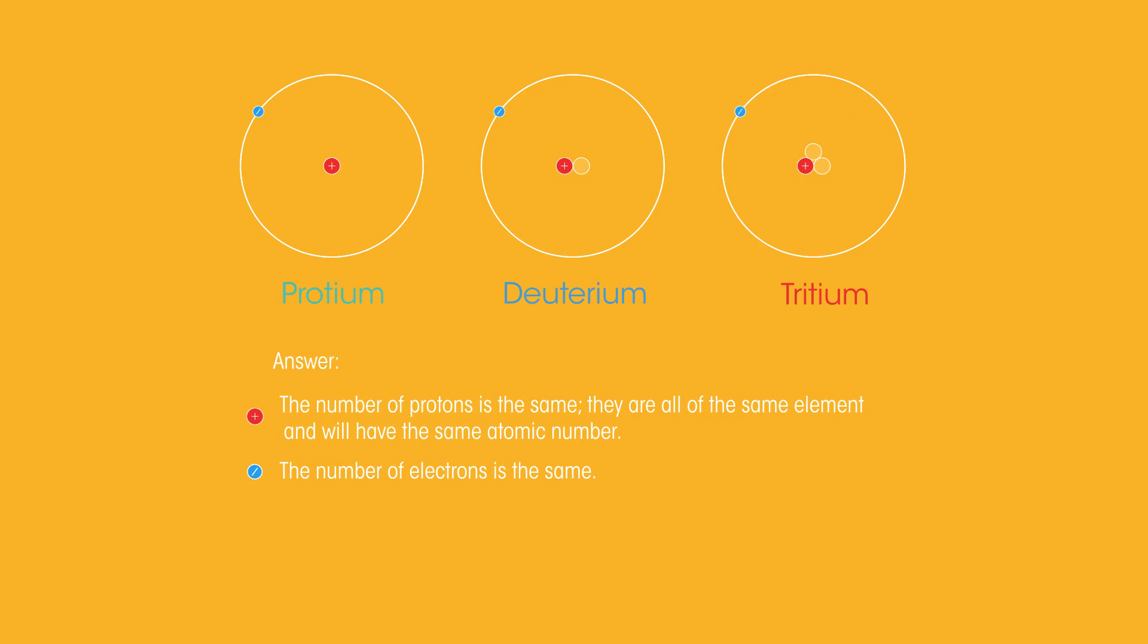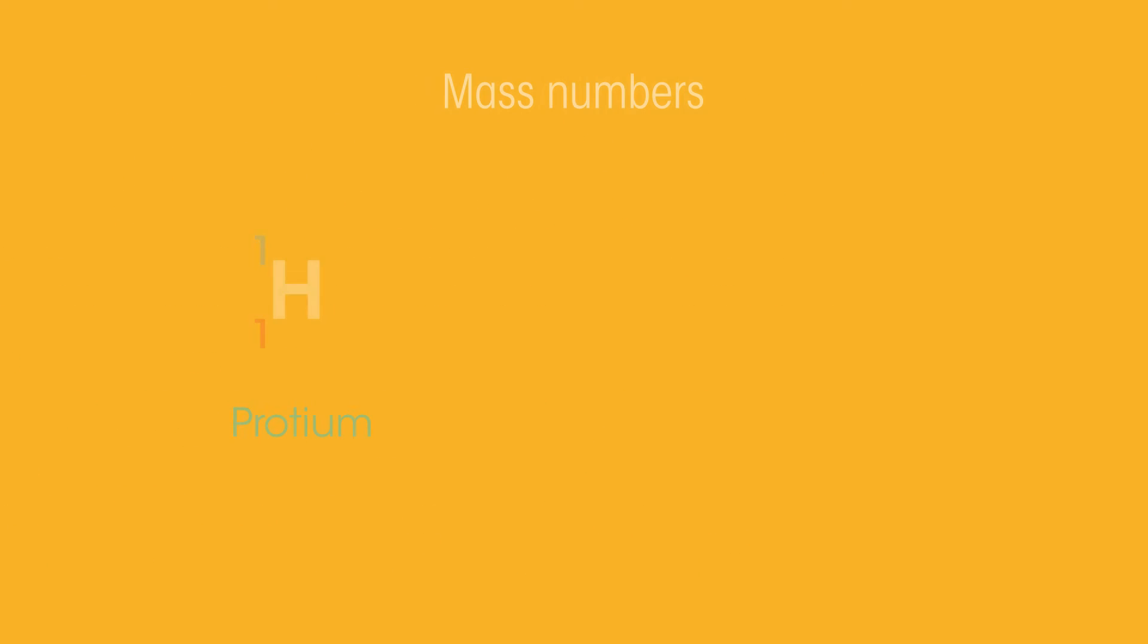The number of electrons is the same. The number of neutrons is different. Zero in protium. One in deuterium. And two in tritium. Consequently, the mass numbers are different.